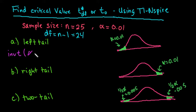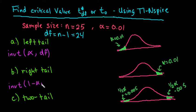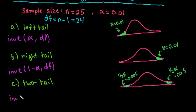For a left tail, our area would just be alpha and our degrees of freedom would be 24. For a right tail you would use INVERSE T — because the calculator always gives us the area to the left — you would enter 1 minus alpha. And for a two-tail we would do INVERSE T with half of alpha and our degrees of freedom.